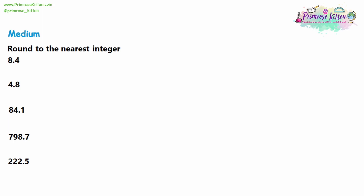Now we've spoken about what place value means, we're ready to round to specific place values. With the first questions, we'll look at rounding to the nearest integer. I'm going to show you a method that will work for all kinds of rounding. Write down the number first — we have 8.4 — then identify what we are rounding to. Rounding to the nearest integer means rounding to the nearest whole number, so we're rounding to the units column. Once you've identified what you're rounding to, rule off after it. Keep everything on the left and lose everything on the right. So we keep the 8, and 8 is the answer — we lose the 4. So 8.4 rounds to 8.